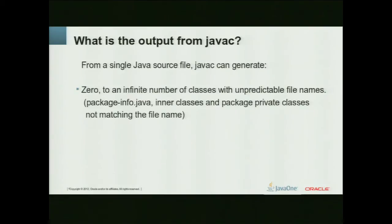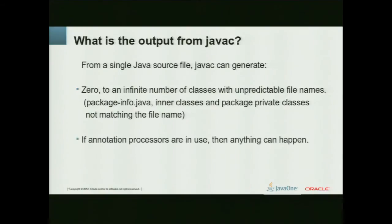You have package-info files that contain no actual code, and they generate no class files — they are only there to generate Javadoc. You have inner classes and package-private files, and they generate files that you cannot really predict the source file name. You have classes at the end of your public class in that file, and those also are unpredictable. And if you're using an annotation processor with preprocessing support in JavaC, it gets even worse because then anything can happen.